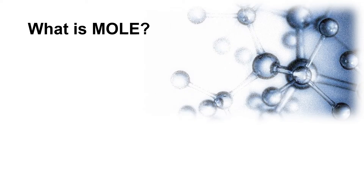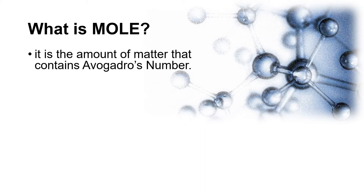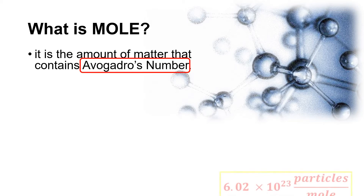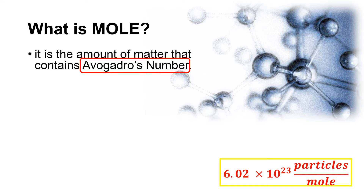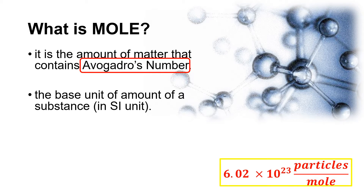Let us now define mole. What is mole? It is the amount of matter that contains Avogadro's number. Avogadro's number is equal to 6.02 x 10²³ particles per mole. We multiply the number of moles of a substance by this Avogadro's number to determine the number of particles present for that certain amount of substance. It is also the base unit of amount of a substance in SI units.